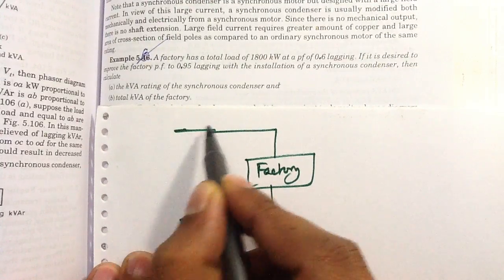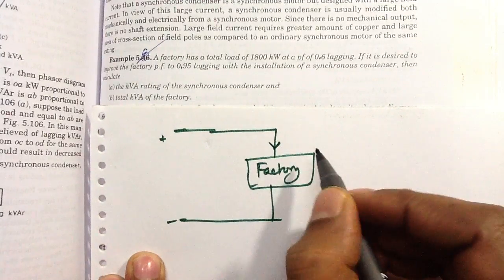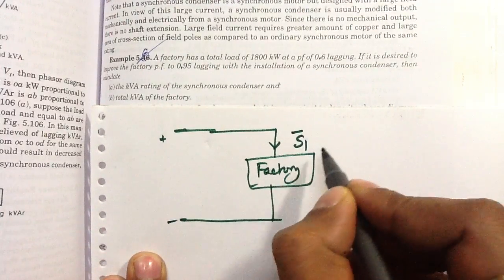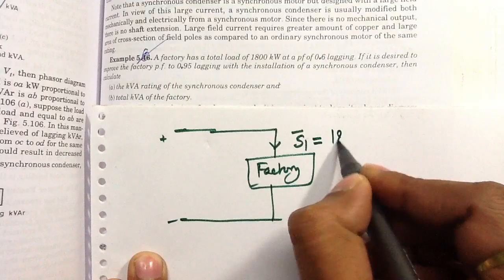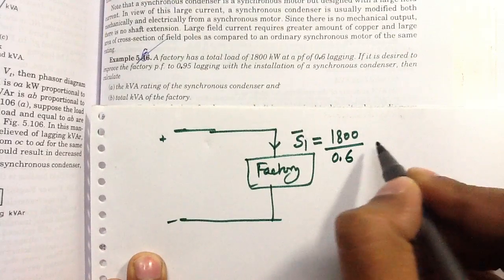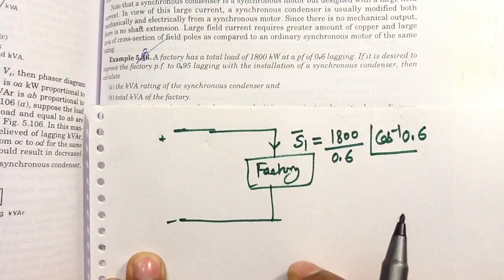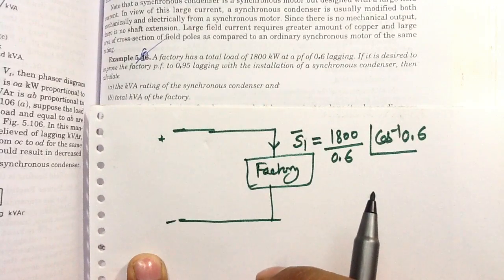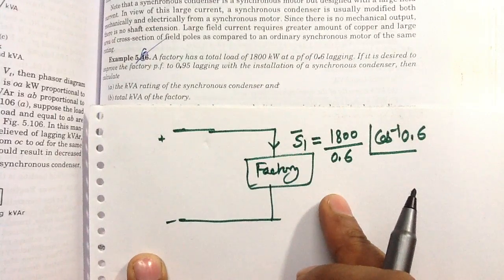The supply is given to the factory, and the factory is drawing complex power S1. The complex power drawn by the factory can be written as 1,800 kilowatt divided by 0.6 at angle cos inverse 0.6. This is the polar form of the complex power.